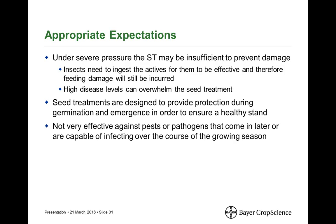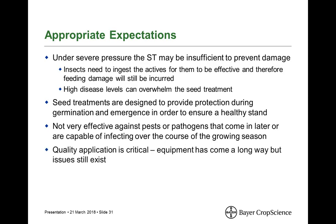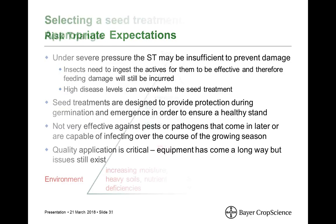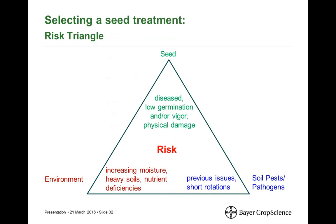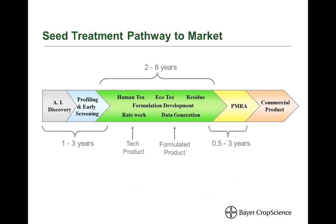That goes back to Aphanomyces and insect pests you might see later in the season. Quality application is critical — equipment has come a long way, but there are still issues, and not all equipment is equal. Use the best equipment available to you. If you calibrate well and pay close attention, sometimes you can get good results even with a lower-standard treater. Let's revisit our risk triangle: you now understand more about these components and hopefully can better identify where your risk is. Each time you have a risk factor, put it into that triangle and see how many you have at the end of your analysis.